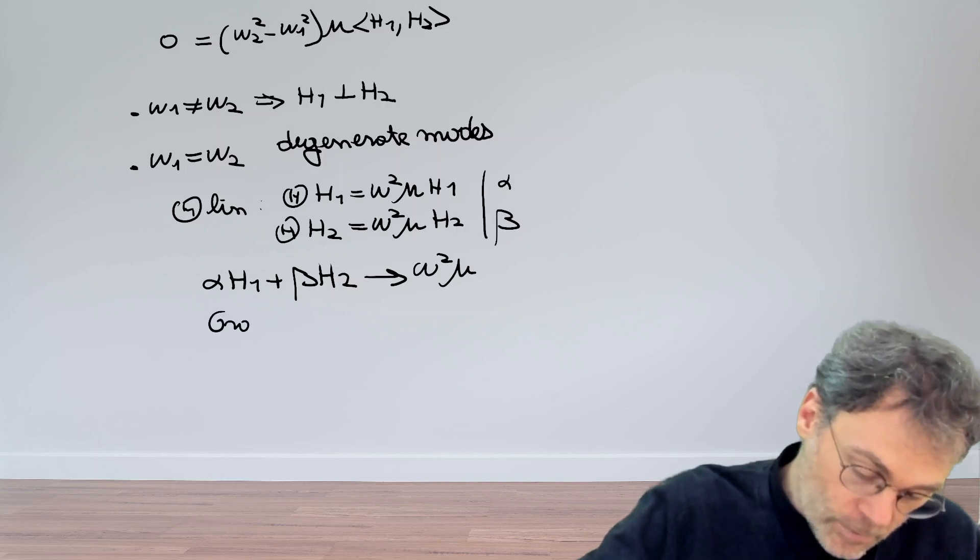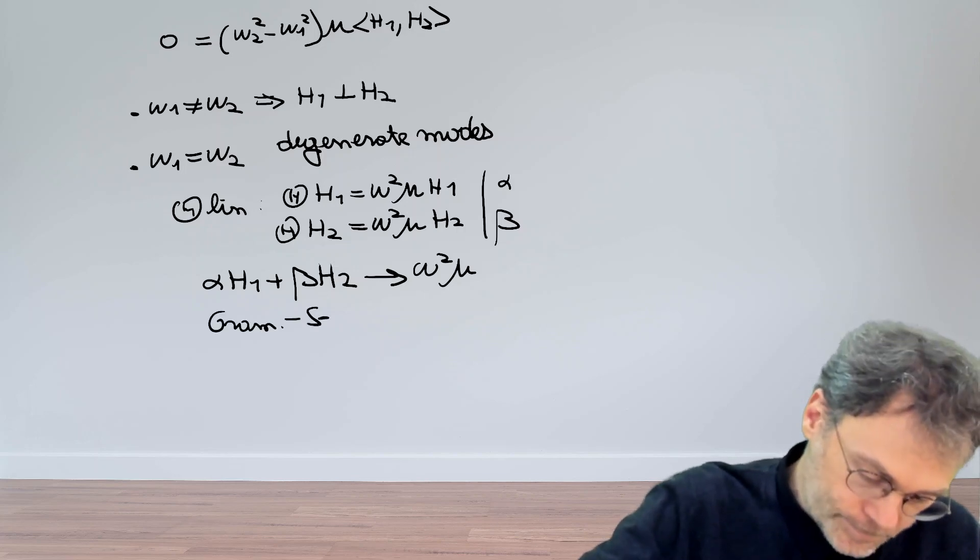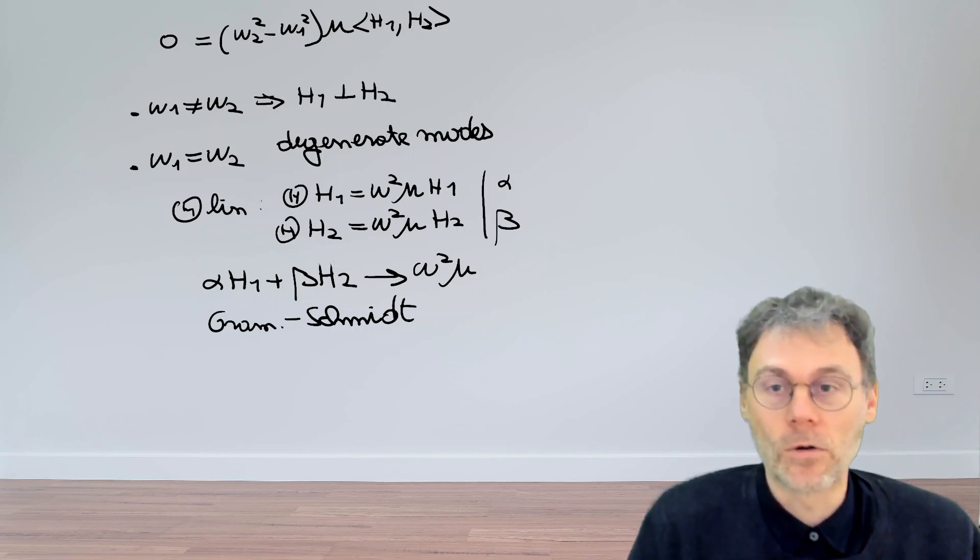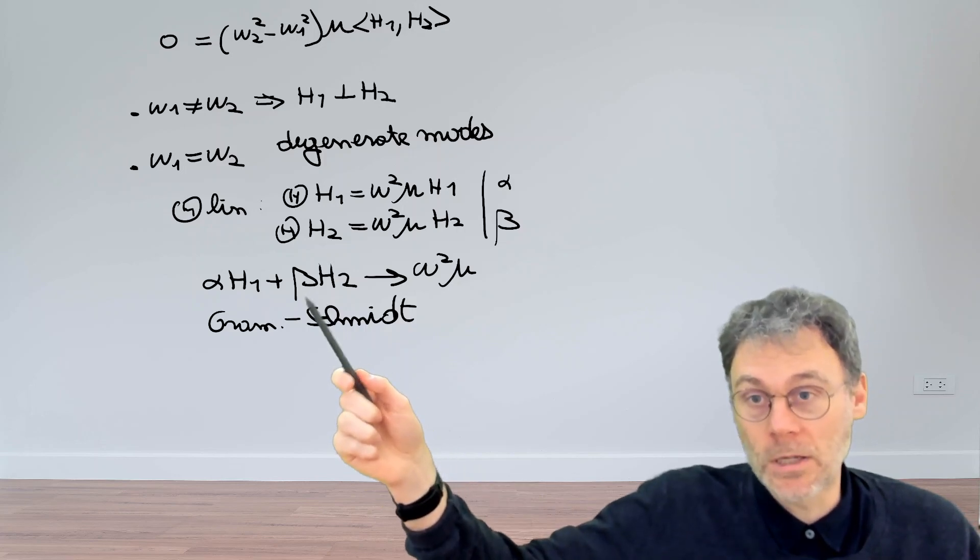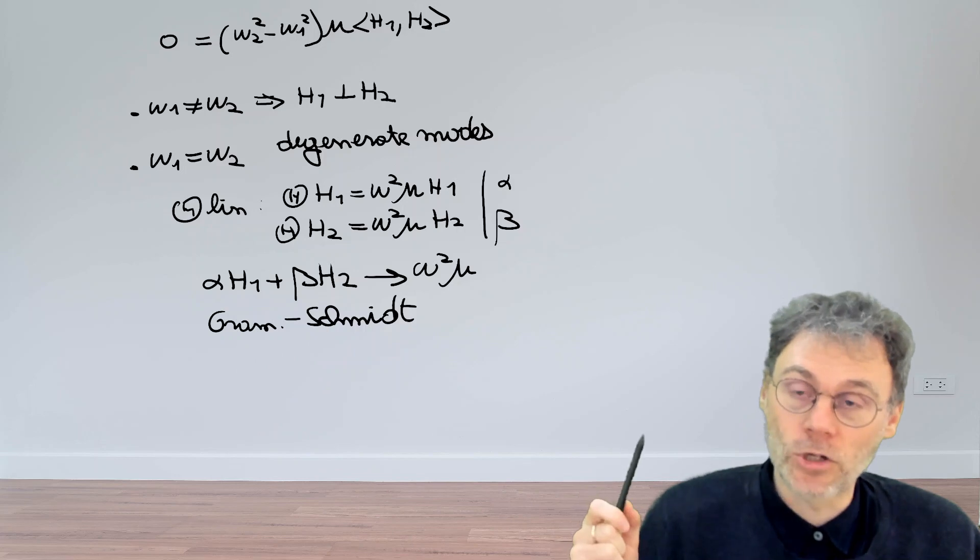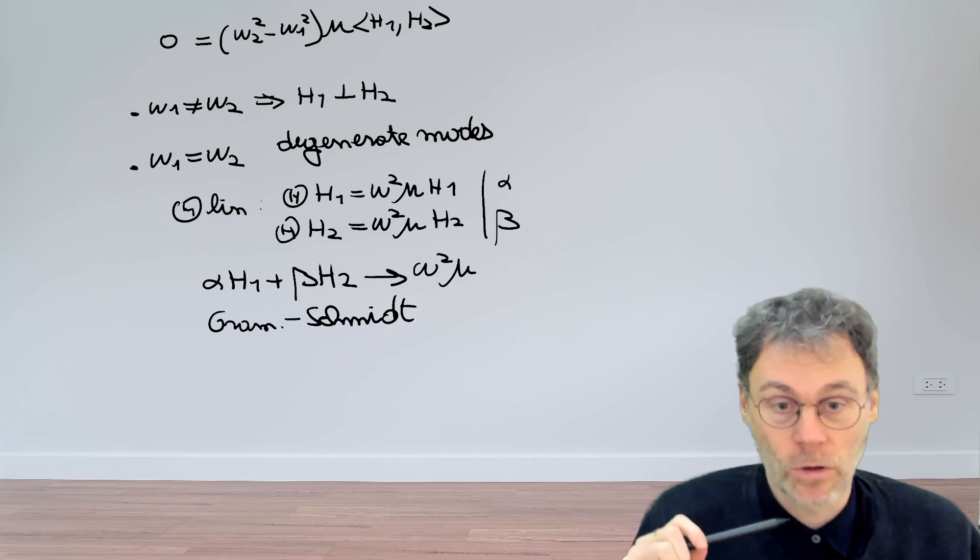And there's a well-known procedure from linear algebra, which is the so-called Gram-Schmidt orthogonalization procedure, which will allow you to find within this family, this two-dimensional family of functions, to find two functions which are orthogonal.